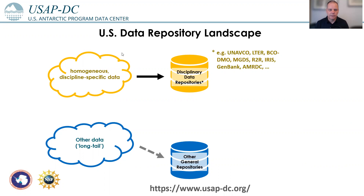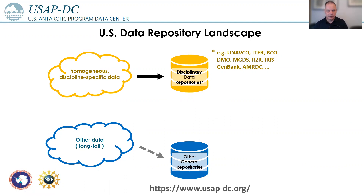But there's a lot of data I see as a group that does not really fall in this category. They're not as standardized, not homogeneous, and usually not served by discipline-specific repositories. These data sometimes get stored in general repositories — whether Figshare, Zenodo, or others — but sometimes they're not even archived anywhere.